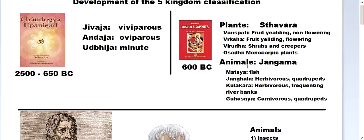Animals in the Susruta Samhita were classified into Matsya (fish), Changala (herbivorous quadrupeds), Kulukara (herbivorous animals frequenting river banks), and Guhasaya (carnivorous quadrupeds living in caves). Those were the early Vedic attempts on classification.